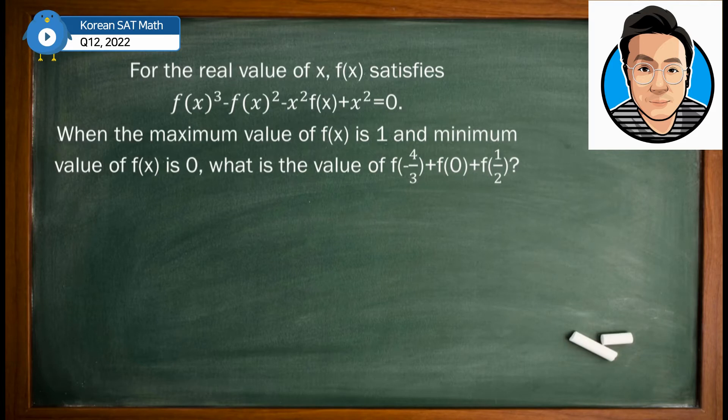The question is: for the real value x, f satisfies f(x)³ - f(x)² - x²f(x) + x² = 0. When the maximum value of f(x) is 1 and minimum value of f(x) is 0, what is the value of f(-4/3) + f(0) + f(1/2)?